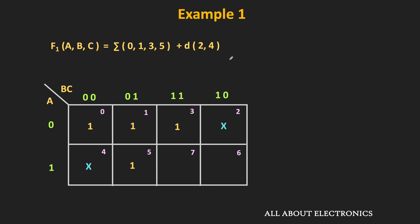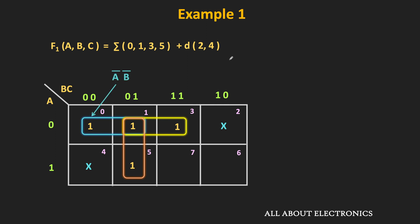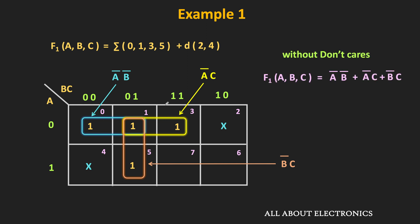Without the don't care condition, we can make the group of m0 and m1, the group of m1 and m3, and the group of m1 and m5. This group in blue corresponds to A̅·B̅, while the group in yellow corresponds to A̅·C, because in this group the value of variable A is equal to 0 while the value of variable C is equal to 1. This last group corresponds to B̅·C. So without using the don't cares, the minimized function is equal to A̅·B̅ + A̅·C + B̅·C.